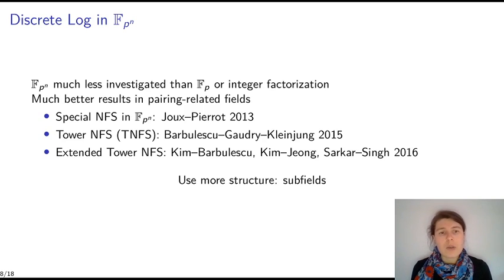In 2015, Barbulescu, Gaudry and Kleinjung designed the tower number field sieve. That is a variant that makes use of the tower structure of the field for FP to the n. In 2016, Kim and Barbulescu designed a new version where they use the subfields of the finite field. So they exploit the fact that there are many possible subfields to make the number field sieve faster. It was improved later by Kim and Jeong.